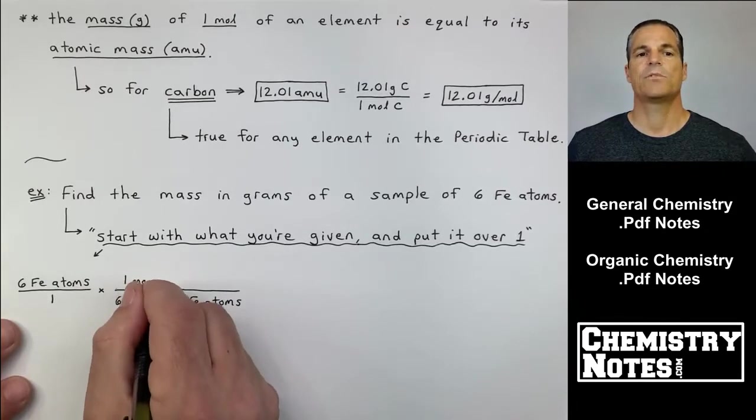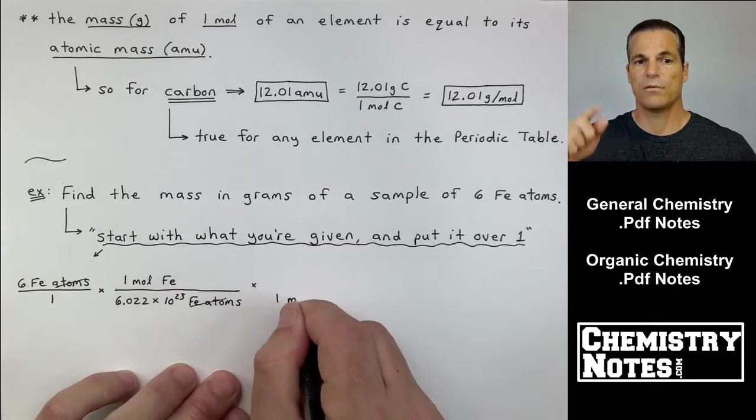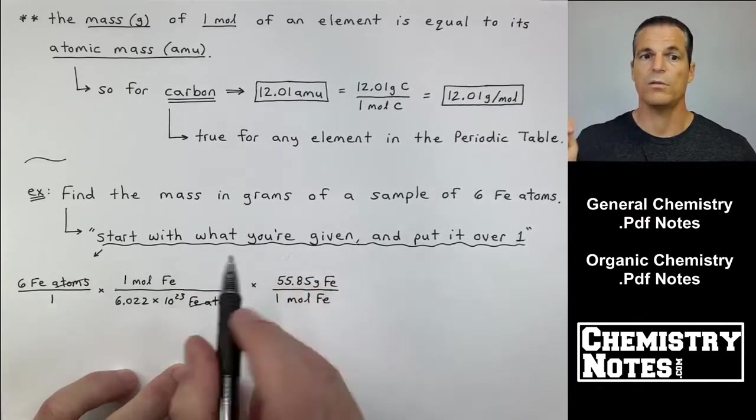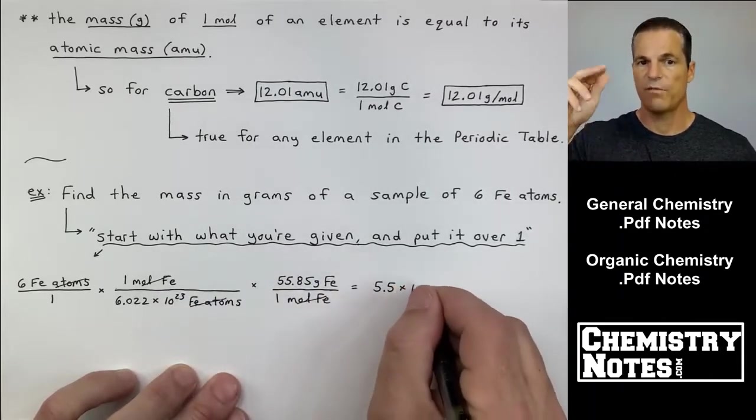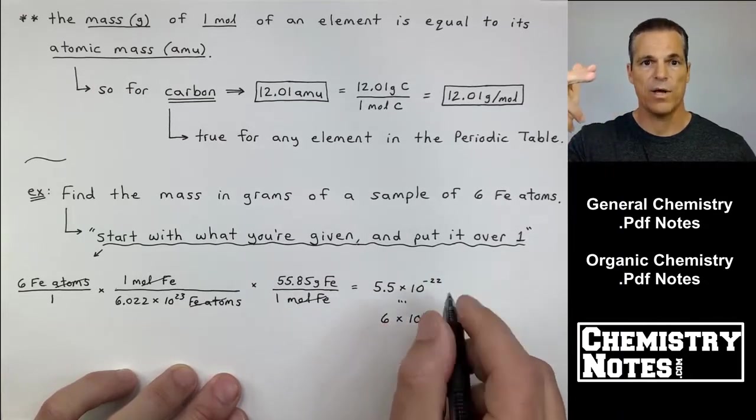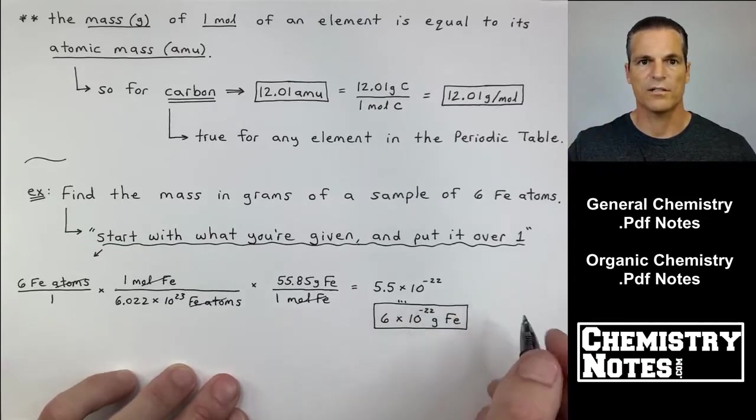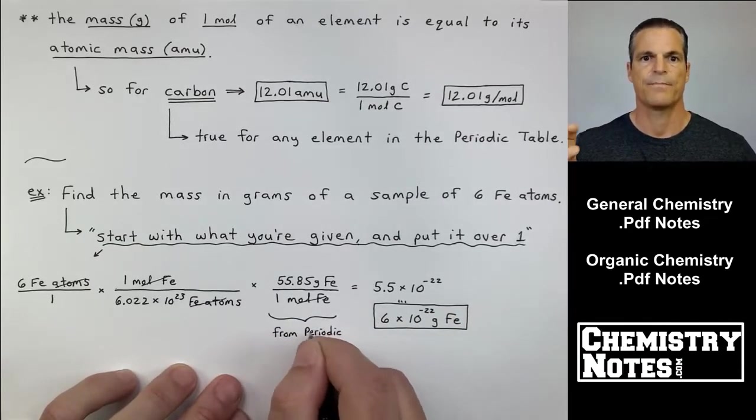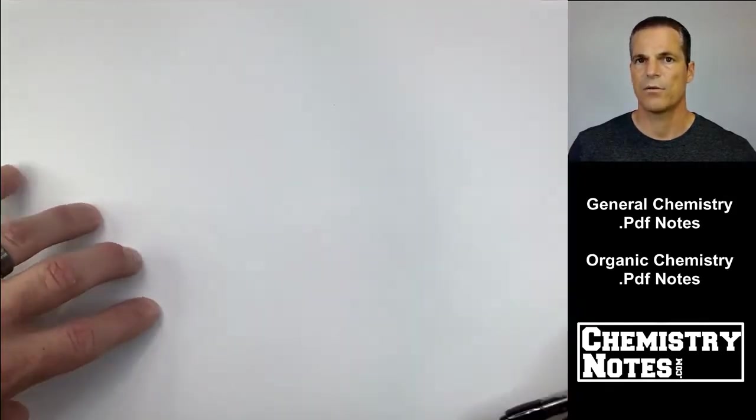Six Fe atoms over one. We have to get out of atoms and into moles. So on the bottom, 6.022 times 10 to the 23rd iron atoms for every one mole of Fe. Now I'm in moles of iron. Well, for every one mole of Fe on the periodic table, it weighs 55.85 grams of Fe. Notice I include all the units. I'm not leaving any units out. Very important because I need to follow the units. So they end up with 6 times 10 to the minus 22nd grams of Fe.